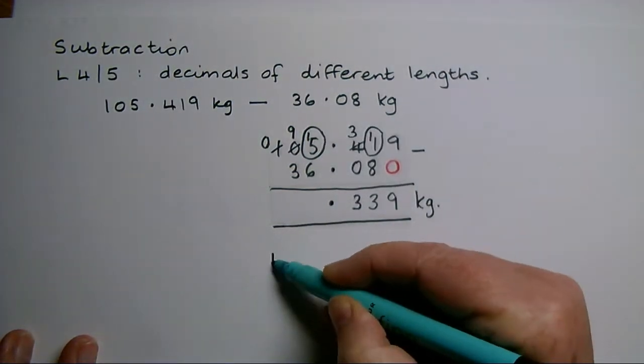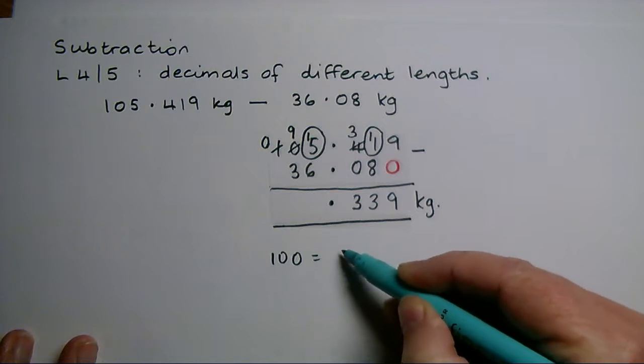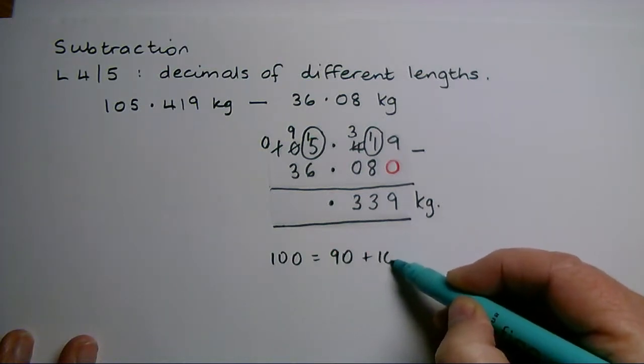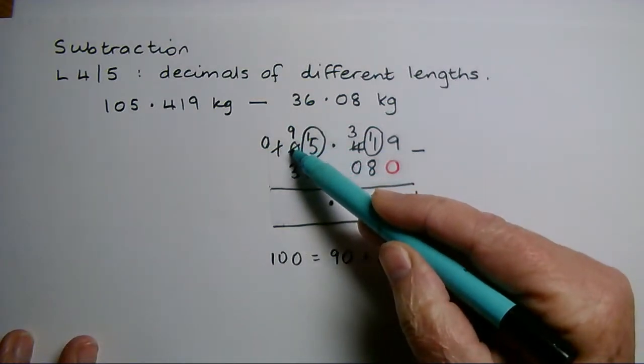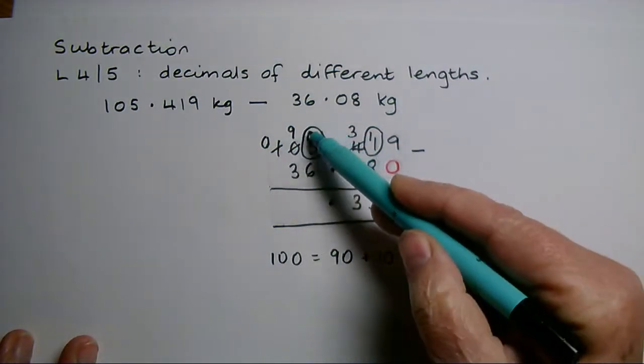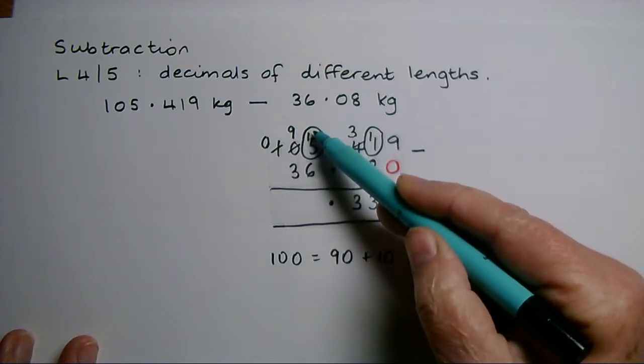So that one hundred, I'm turning into nine tens and ten units. I've put the nine tens in the tens column and I've added those ten units to the five that were already there to give me fifteen.